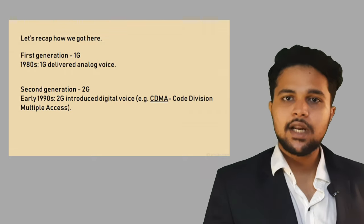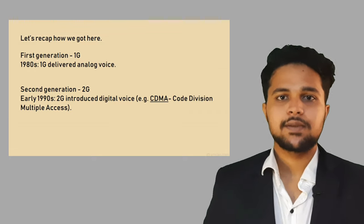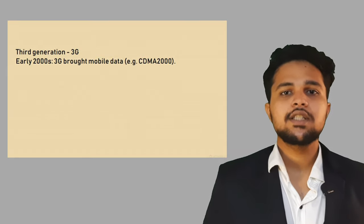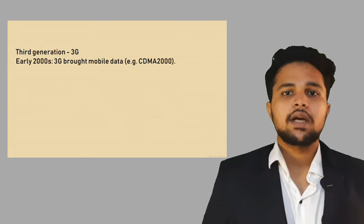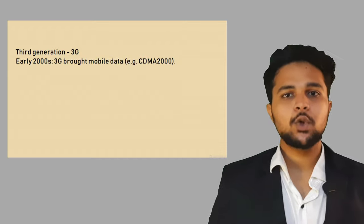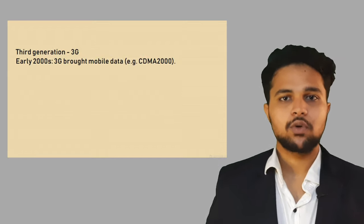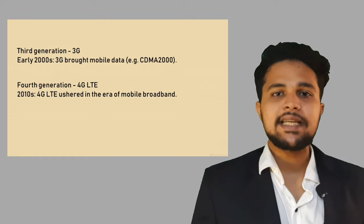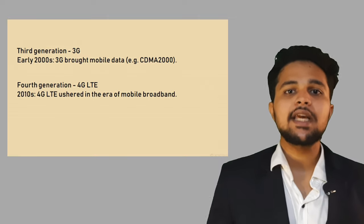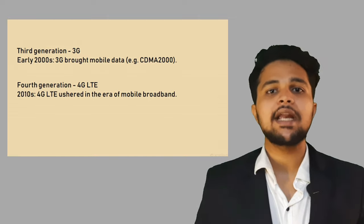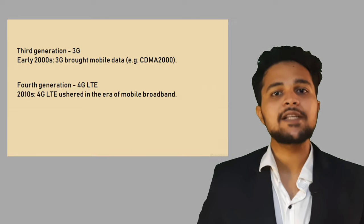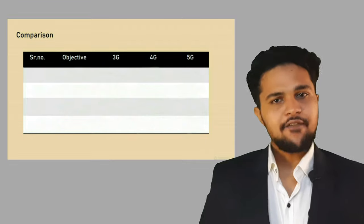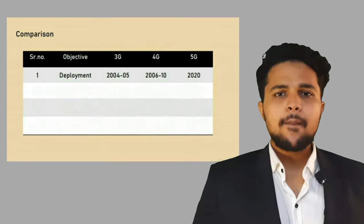Third generation, 3G, in the early 2000s — 3G brought mobile data, for example CDMA2000, through which we could web browse. Fourth generation, 4G LTE, in the 2010s — 4G LTE ushered in the era of mobile broadband and digital voice by providing high-speed data. Let's compare 3G, 4G, and 5G.